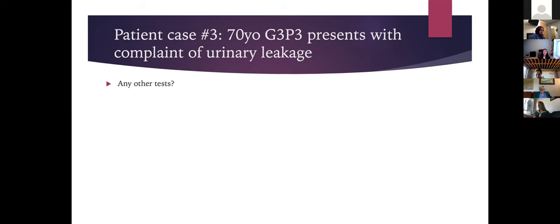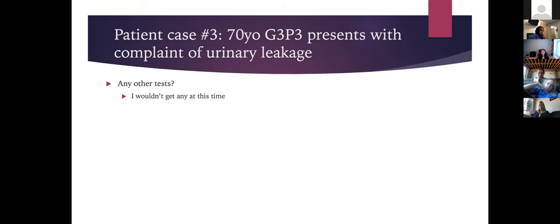Physical exam shows normal atrophic external genitalia for a 70-year-old, no prolapse, and a PVR of 10. Urinalysis and urine culture would be appropriate; a bladder diary and urodynamics are not needed at this point since she hasn't tried any treatment yet and her history is clear.